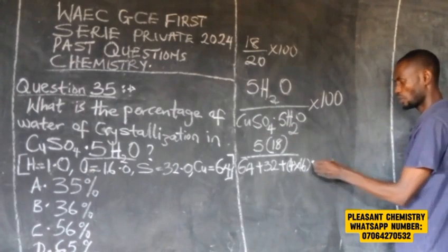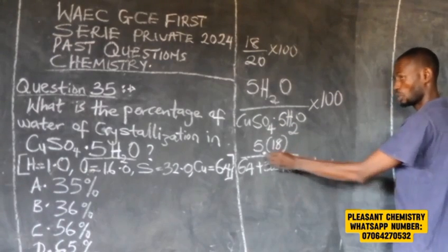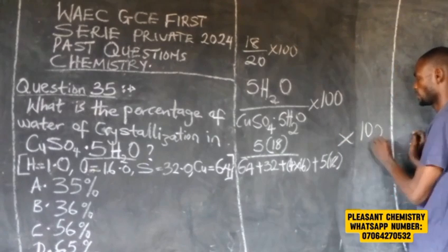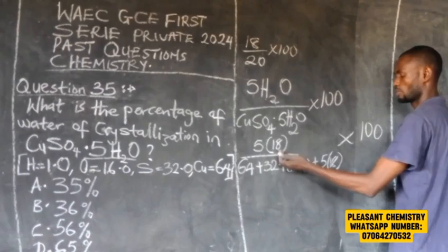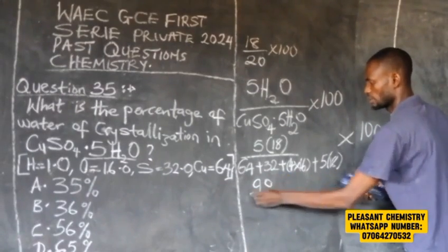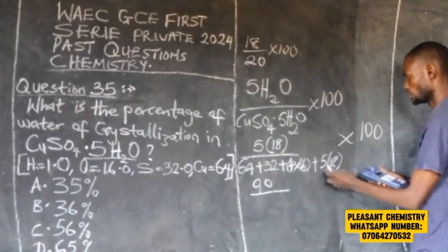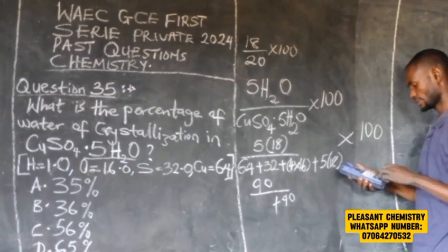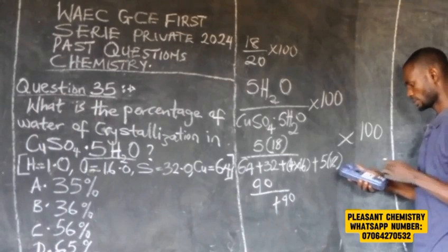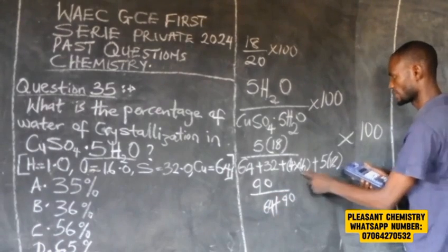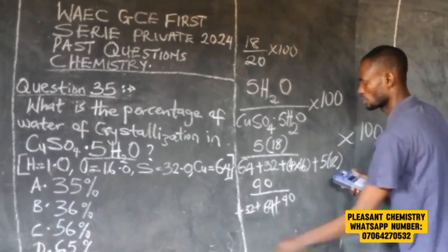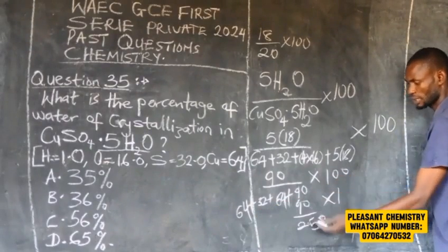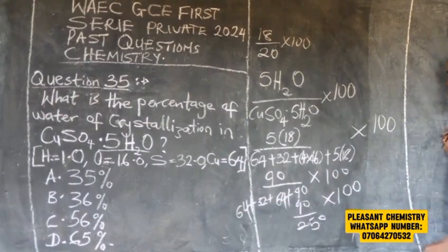The dot 5H₂O also contributes 5 × 18 = 90. So the full denominator is: 64 (Cu) + 32 (S) + 64 (O₄) + 90 (5H₂O) = 250. The numerator is 90. So we have 90 divided by 250, multiplied by 100.